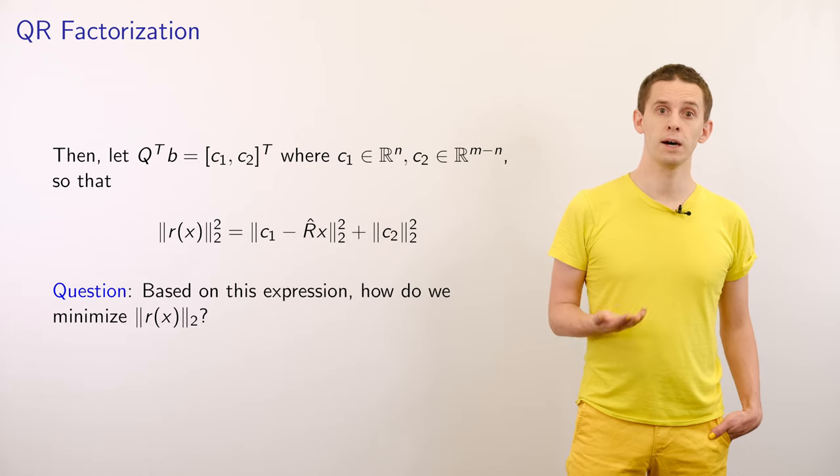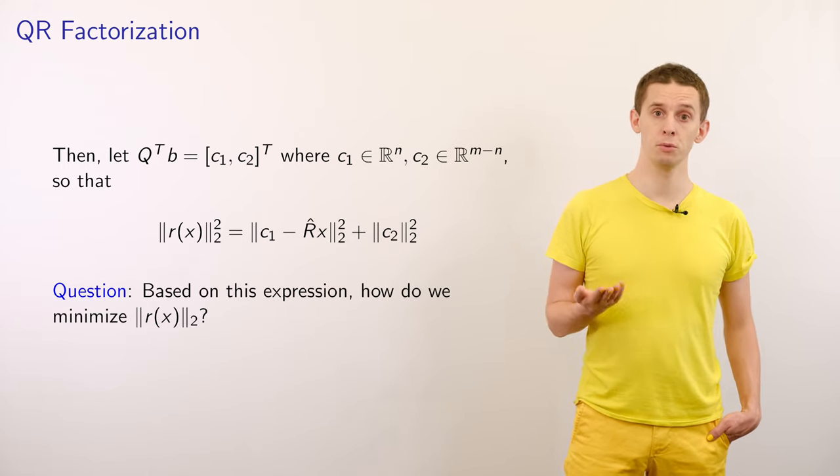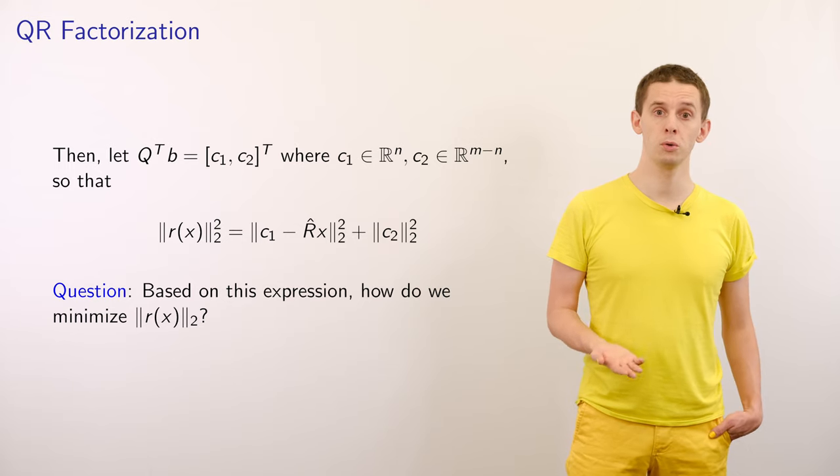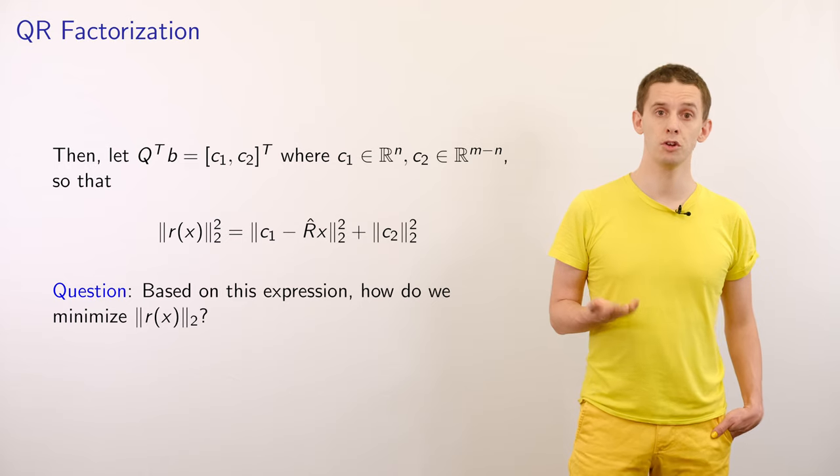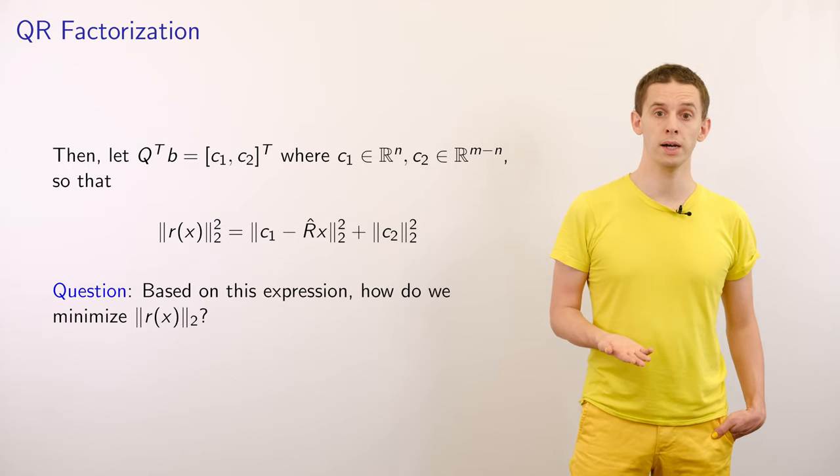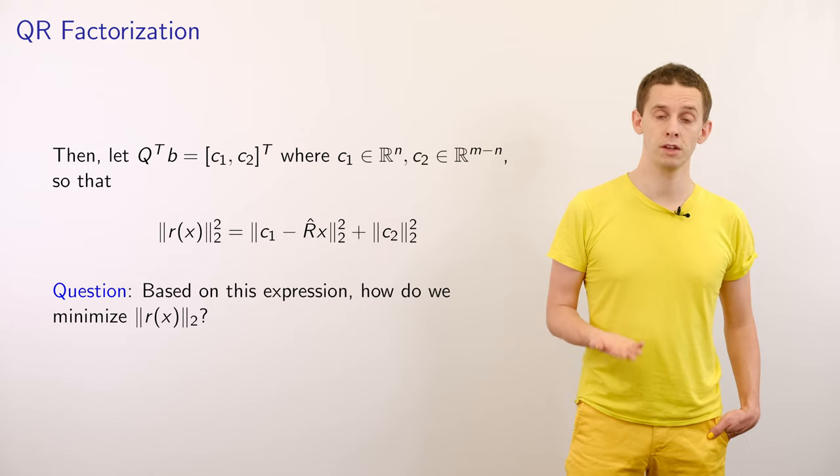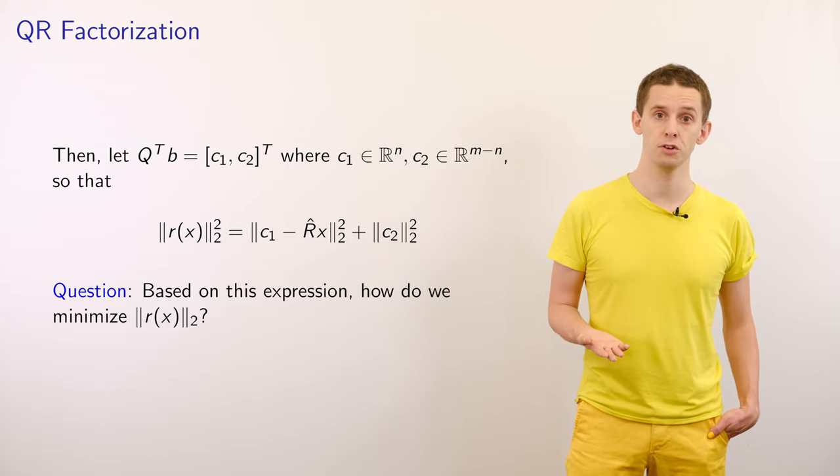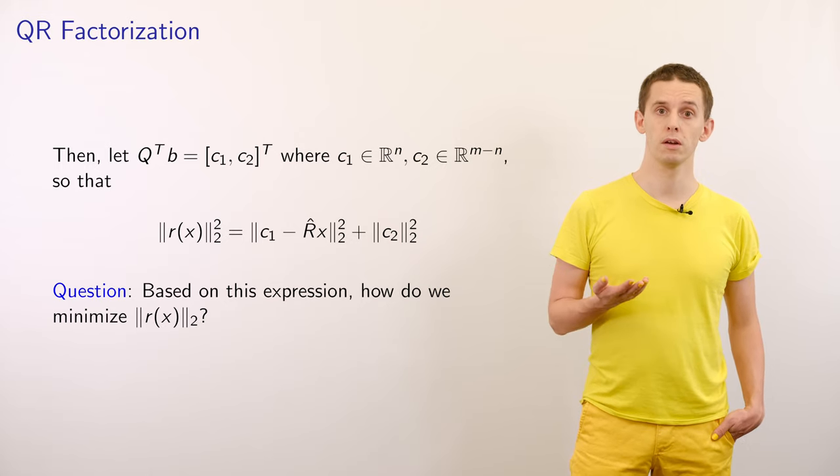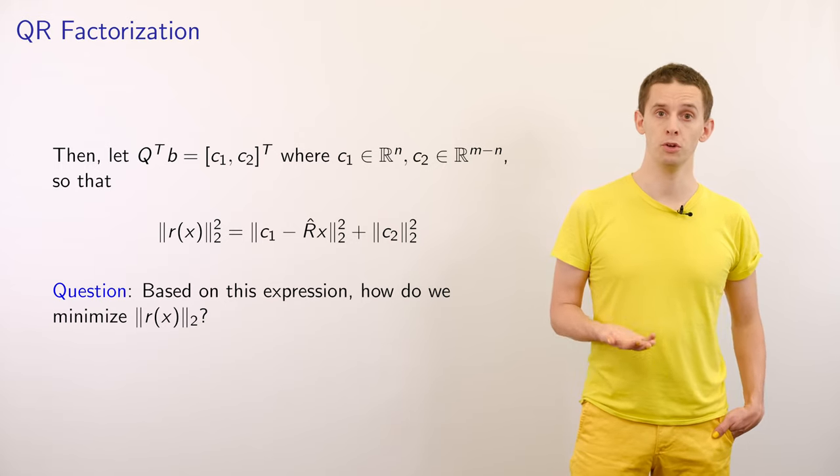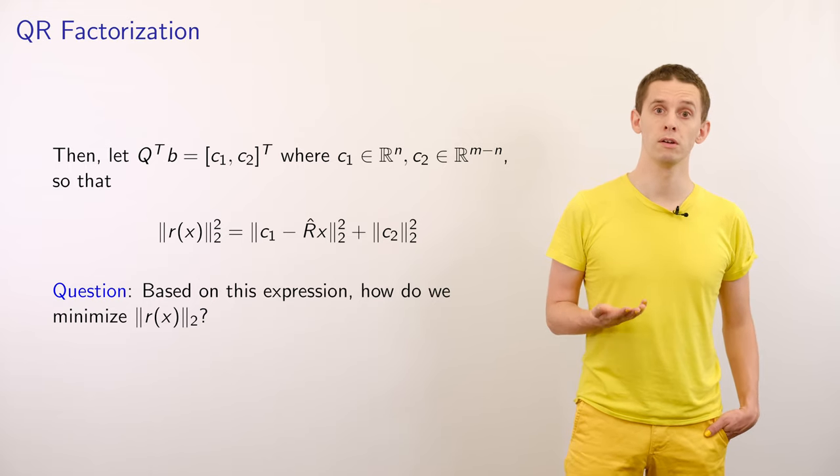That allows us to write our 2 norm squared of the residual in terms of two components. The first part is the 2 norm squared of C1 minus R hat applied to X, and the second is the 2 norm squared of C2. We've now broken up this Euclidean norm squared into the Euclidean norm squared of two smaller vectors.